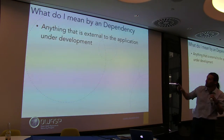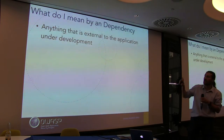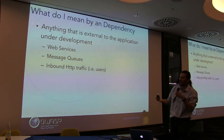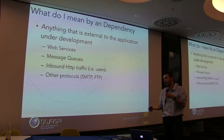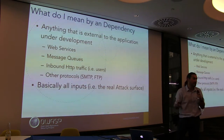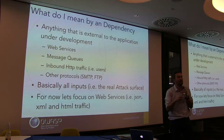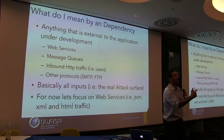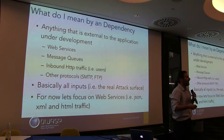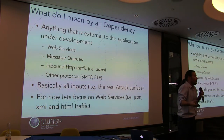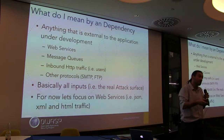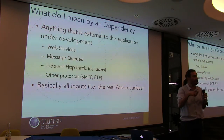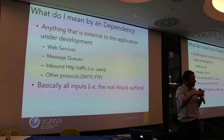Here's what I mean by dependency: anything external to the application in development — web services, message queues, inbound traffic, other protocols. Ultimately we want surrogates for everything. We want things that look and feel like the real thing but aren't. Although they should be, because if they're not the real thing, ultimately it means there's a problem in your unit test or integration test infrastructure.